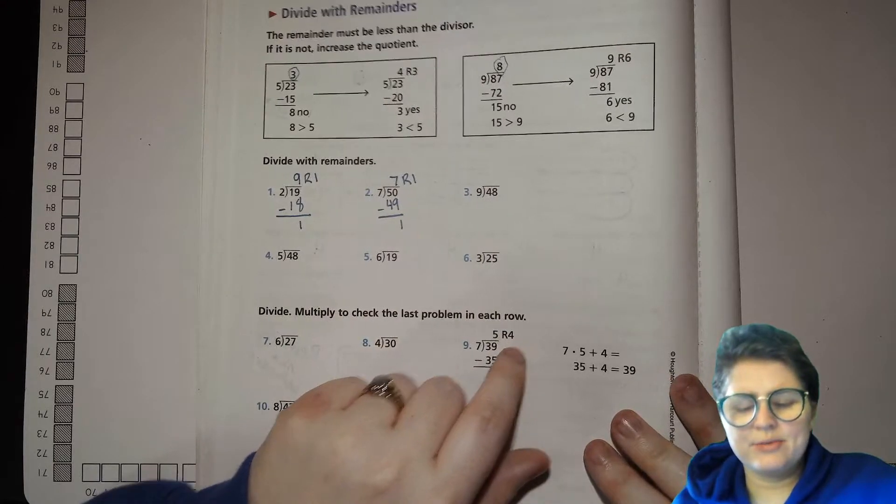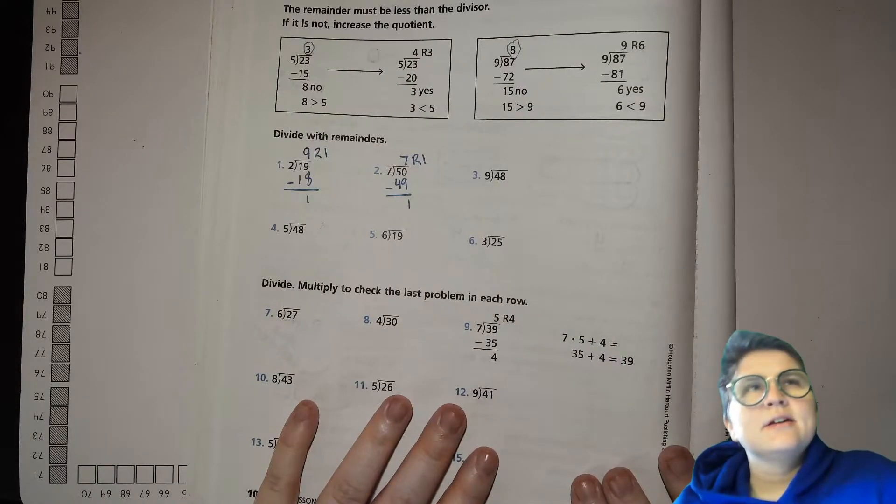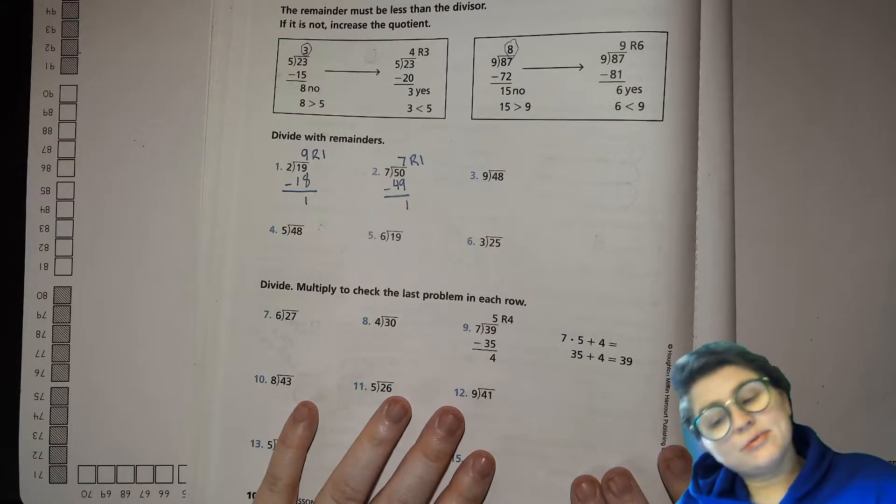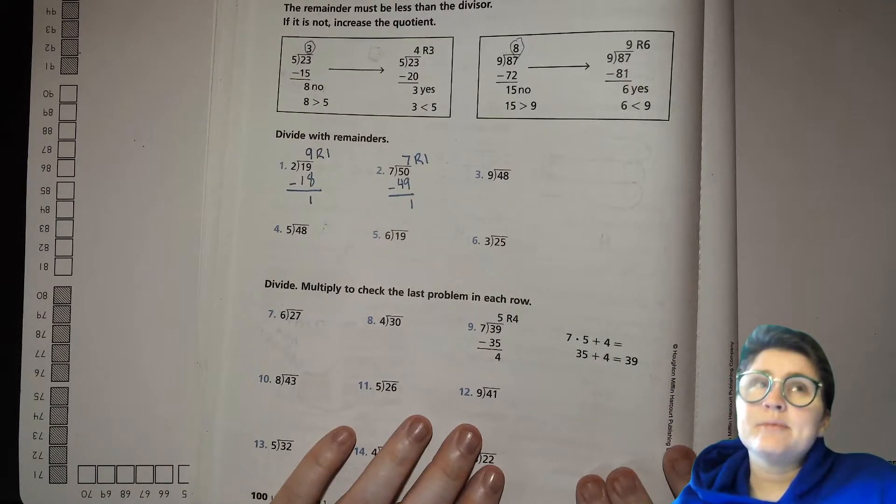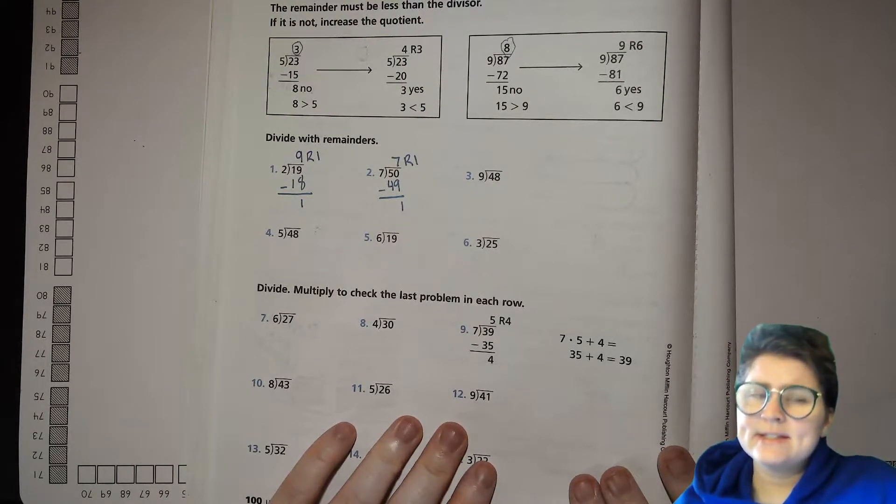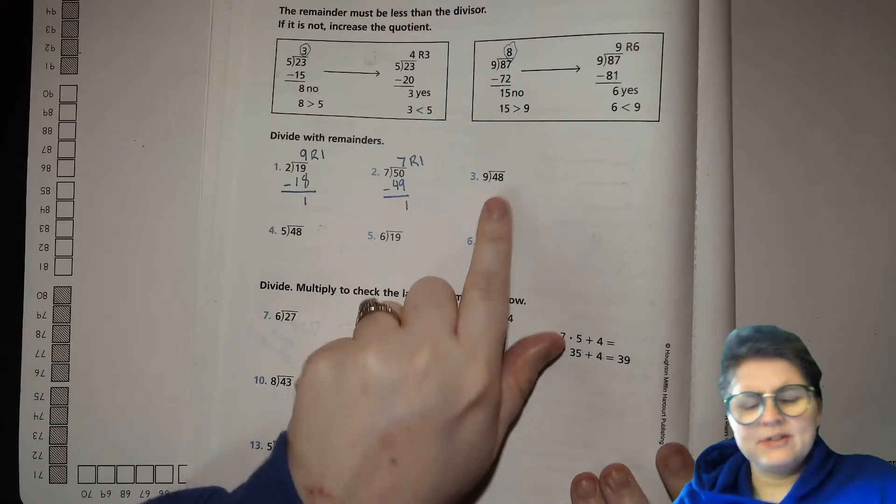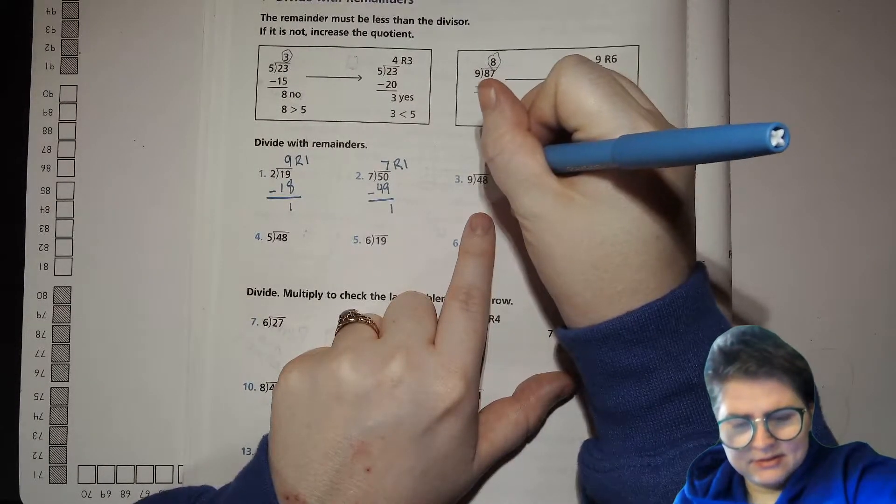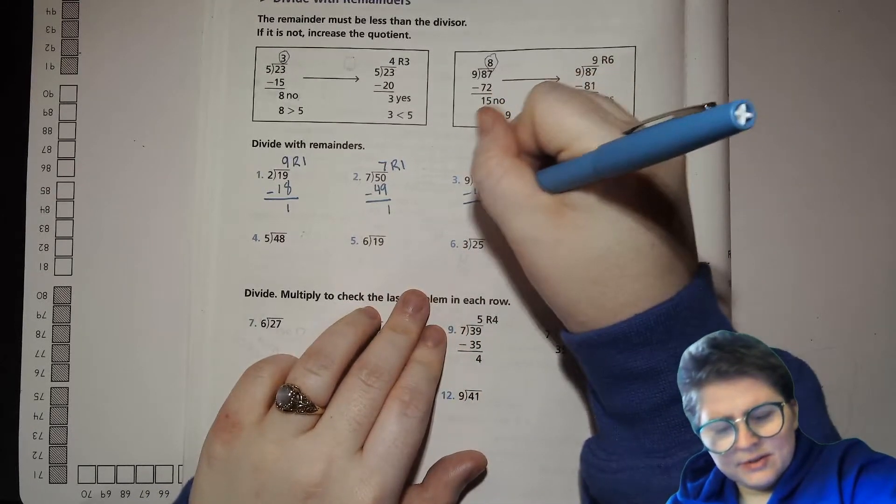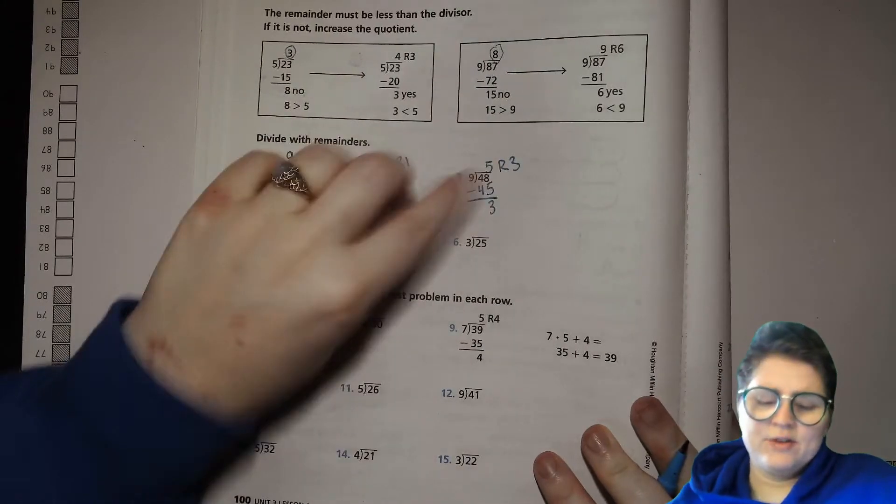Let's look at number 48 divided by 9. Let's think. 9 times 1 is 9. 9 times 2 is 18. 9 times 3 is 27. 9 times 4 is 36. 9 times 5 is 45. That's pretty close. 9 times 6 is 54. But that's too high, right? So, what do we need to pick for this? 9 times 5, which is 45. Find the difference. 5 remainder 3. You can have 5 groups of 9 and you'll have 3 left.